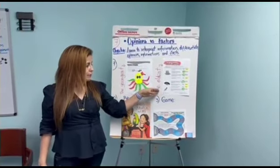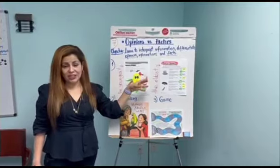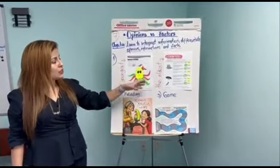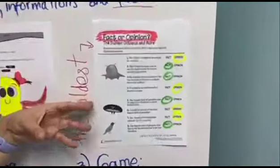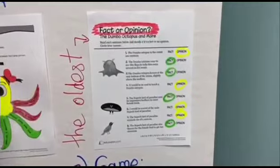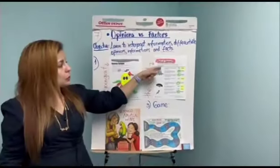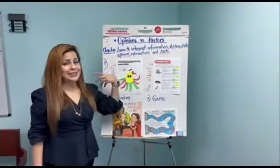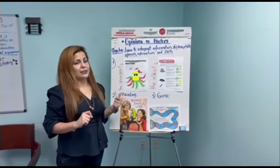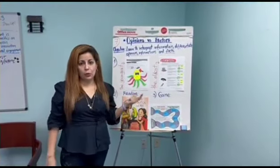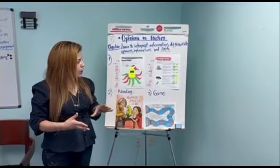If you are working with the oldest children who can read, you can give them the Dumbo octopus activity and ask them to read a sentence and circle the correct answer — whether it is a fact or an opinion. Then you compare with the whole group.